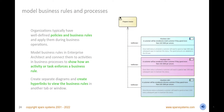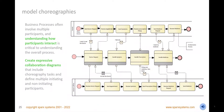Model business rules in Enterprise Architect and connect them to activities in business processes to show how an activity or task enforces a business rule. Connect any number of business rules and drill down from a business process diagram to a sub-diagram that displays just the selected activity and the business rules. Model choreographies to help you visualize the interaction between multiple participants and understand how they interact and contribute to the overall process. Create expressive collaboration diagrams that include choreography tasks and define multiple initiating and non-initiating participants, defining messages and viewing the icons inline, connecting them to activities in the participants' pools.